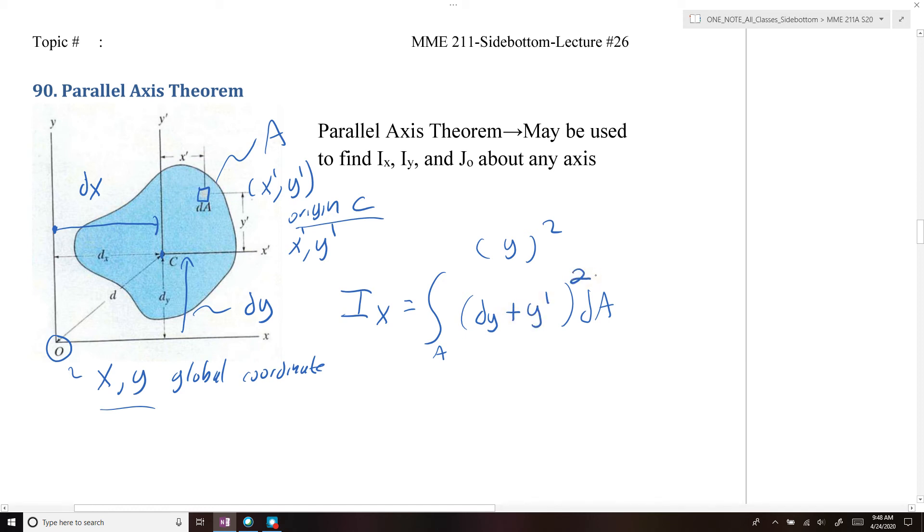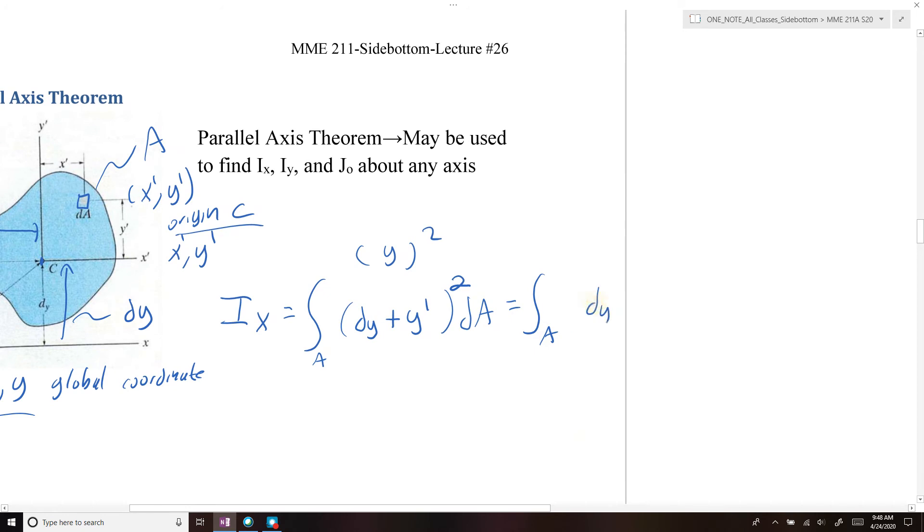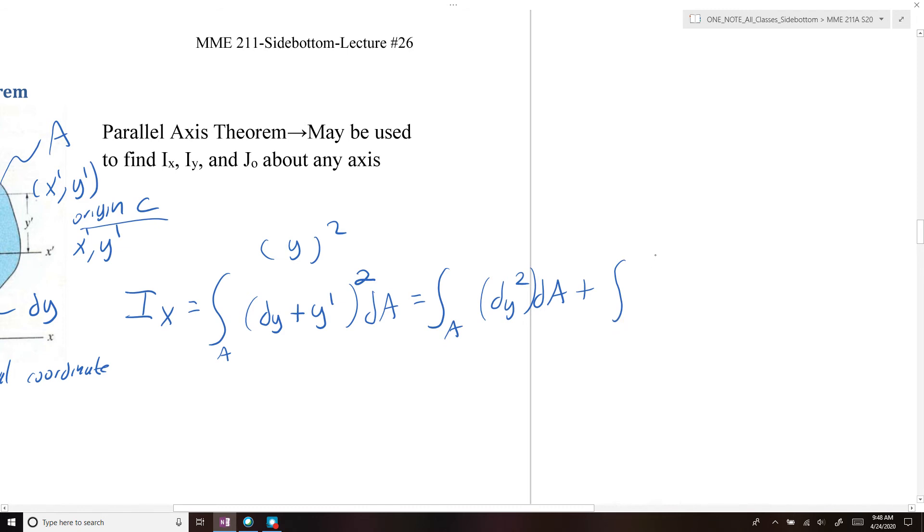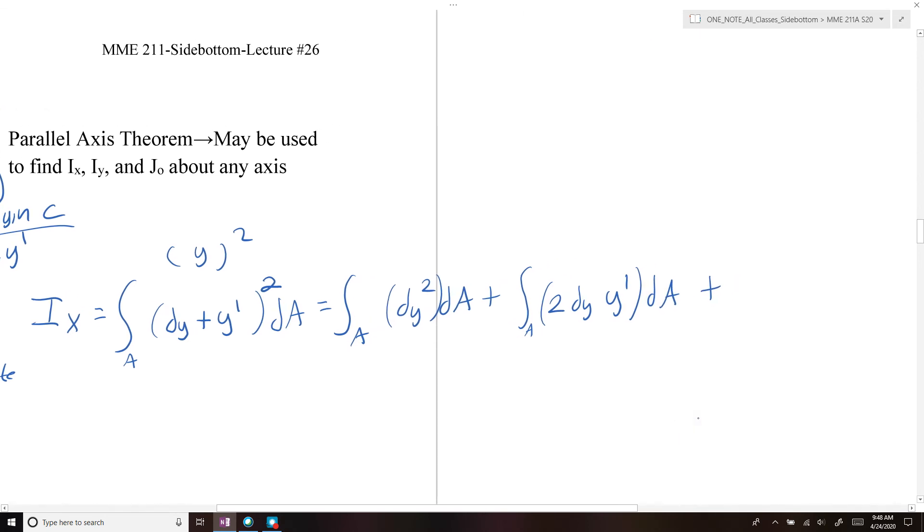So if we square that, what we end up getting is the integral of A, dy squared dA plus the integral of 2dy y-prime dA plus the integral of y-prime squared dA.